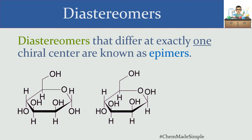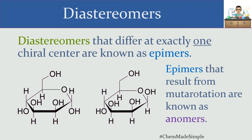When it comes to sugar molecules, whenever you have a pair of epimers that differ at a particular carbon — the anomeric carbon, which is unique because it's the only one attached to oxygen — those molecules are known as anomers. Epimers that result from mutarotation are known as anomers. These molecules can actually convert from one to the other by opening into a linear form and closing back into the other ring. So the ring can open up, and when it closes back down it can return to the original form or convert to the other anomer. When you have epimers at that anomeric carbon — the carbon connected to oxygen — they are known as anomers.